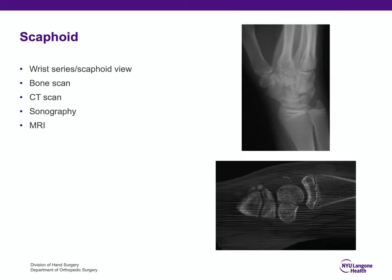When we have a suspected scaphoid fracture, the wrist series or scaphoid view is usually diagnostic. Bone scan is generally not used anymore because it would be positive but can't differentiate a scaphoid fracture from a ligamentous injury. CT scan can be useful for assessing displacement and early diagnosis. If you suspected a scaphoid fracture and radiographs were negative, the best diagnostic test would be an MRI.